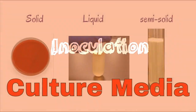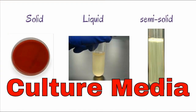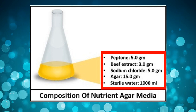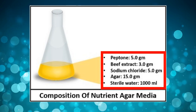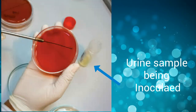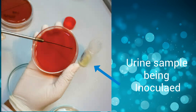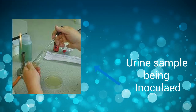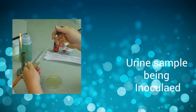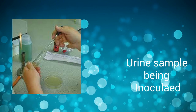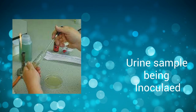The first step is inoculation, where we place the sample into a container of sterile culture medium containing nutrients to sustain the growth of the pathogen. Inoculation involves spreading the sample on the surface of a solid medium or introducing the sample into a liquid medium in a tube or flask.